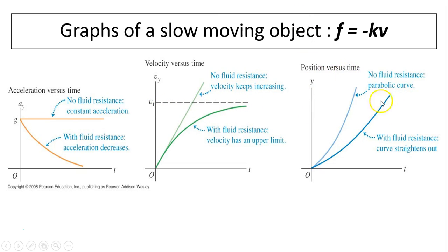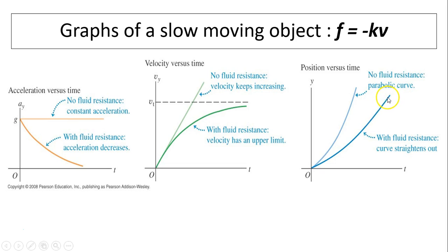Looking at the position versus time graph: with no fluid resistance, x is directly proportional to t², giving a parabolic curve. When fluid resistance is present, the curve eventually becomes a straight line because speed is constant, and the slope of that straight portion is the terminal velocity. So in the beginning it's a parabola, then transitions to a constant slope.